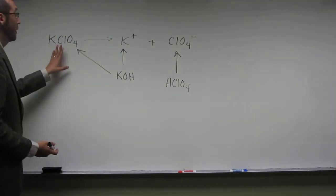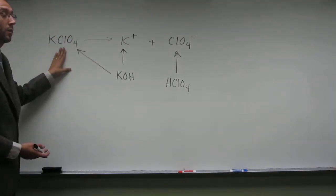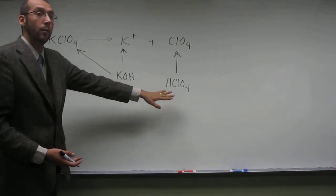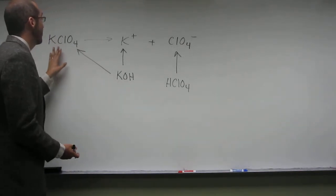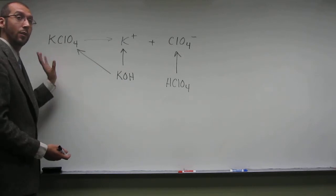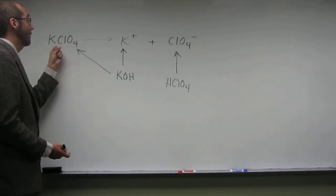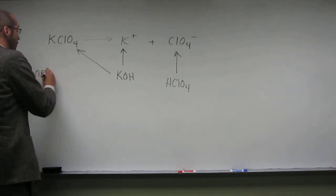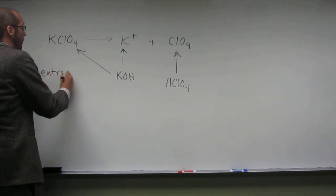If we look here, to get this salt, we could conceivably say we've got potassium hydroxide reacting with perchloric acid to get potassium perchlorate. Since we've reacted a strong base and strong acid to get the salt of a strong base and a strong acid, this is going to be a neutral solution.